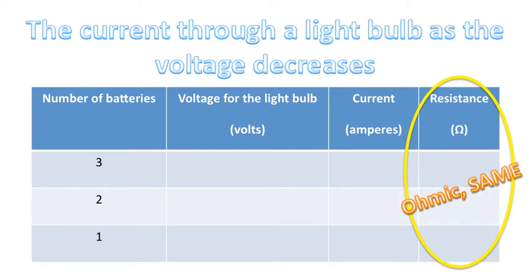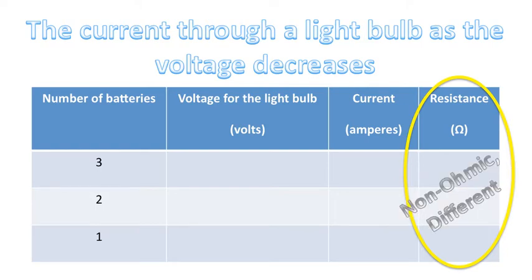Now if it's an ohmic device, you'll see that all the resistance values for the light bulb are the same. However, if it's a non-ohmic device, then the resistance value for the light bulb will change as the voltage changes. In other words, they'll be different, those resistance values.